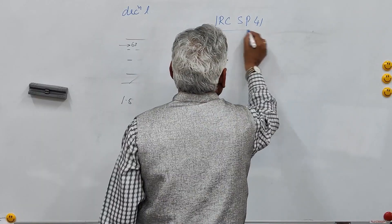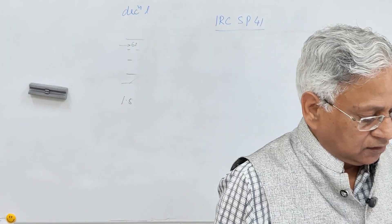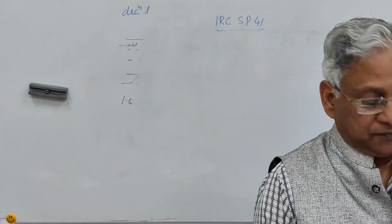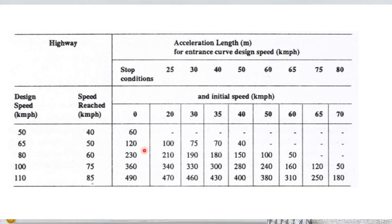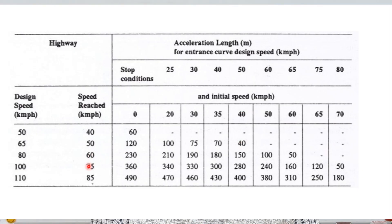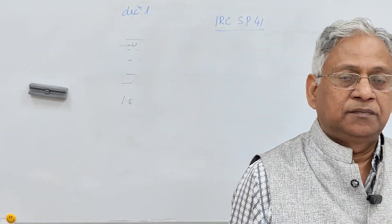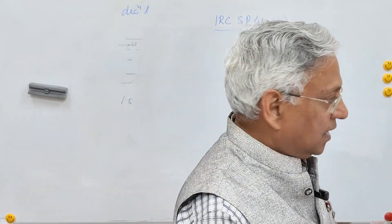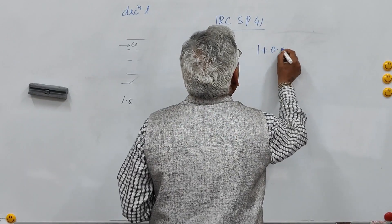IRC SP 41 provides a table to determine the minimum length of the acceleration lane. If you know the speed to be reached and the initial speed, you can determine from this table what the minimum length of the acceleration lane should be. For example, if the initial speed is 40 km/h and the merging speed on the highway is 75 km/h, you need 280 meters as the minimum length. Where the acceleration lane is on an upgrade, the length given in the table can be reduced by a factor of (1 + 0.08G), where G is the gradient.